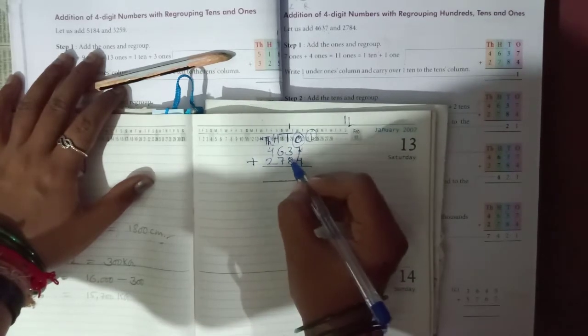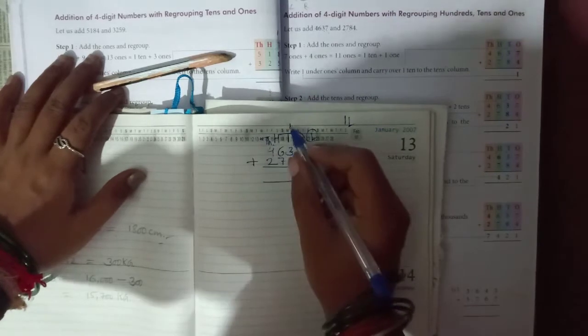We are writing here the right side number. They are both one. So write this one number down and one is carry forward to ten position number. Eight plus three is eleven, plus one is twelve.